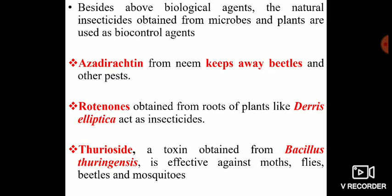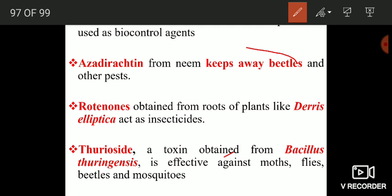Besides using living organisms, natural insecticides obtained from microbes and plants can also be used as biocontrol agents. Here we use the insecticidal compounds extracted from their bodies rather than the organisms themselves. For example, azadirachtin, obtained from the neem tree, keeps away beetles and other pests and can be extracted and used as a pesticide in crop fields.